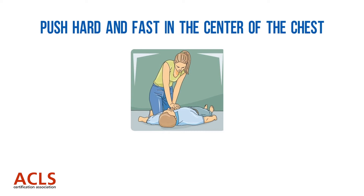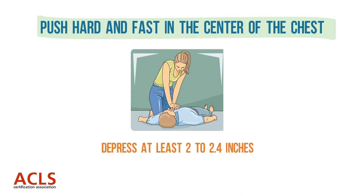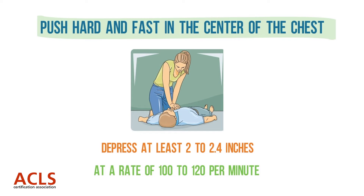To initiate CPR, provide chest compressions using the two-handed technique. Remember to push hard and push fast in the center of the chest. Chest compressions are applied to the lower half of the sternum. Depress at least 2 to 2.4 inches, allowing for full chest recoil on the upstroke. Provide chest compressions at a rate of 100 to 120 per minute.